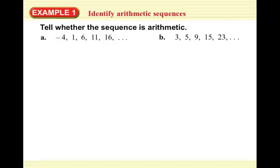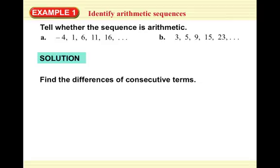We're going to tell whether the sequence is arithmetic. In part a, we have -4, 1, 6, 11, 16. You investigate what you add to get from one term to the next by doing the second term minus the first term, the third term minus the second term, and so on. Doing the second term minus the first — 1 minus -4 — we get 5.